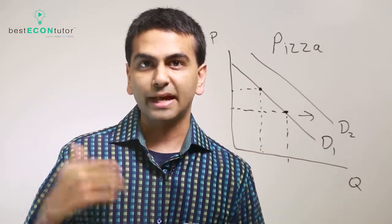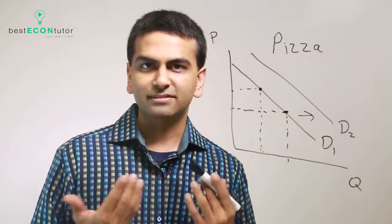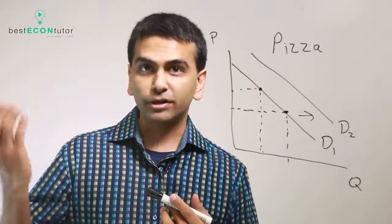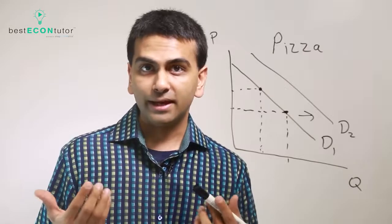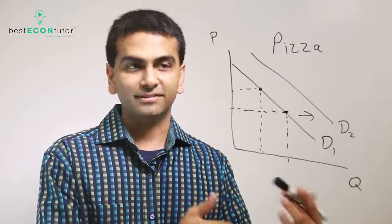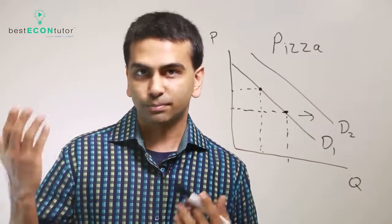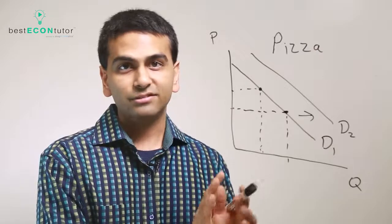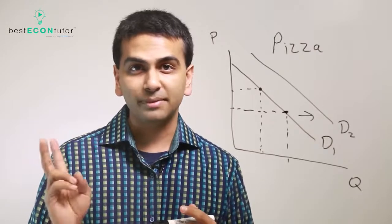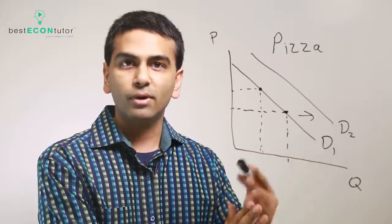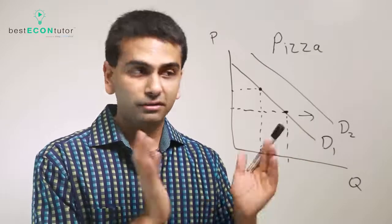Now, on the other hand, if we were looking at a substitute good, meaning something that's kind of in competition with pizza, like burgers. Well, let's say burgers became cheaper. Well, in that case, you probably want to have more burgers and less pizza. So in that case, the demand would actually shift to the left. So if another good's price changes, you have to ask yourself, is that a substitute good, a complementary good, or not related at all? And based on that, you can decide whether you want to shift your demand left, right, or not move it at all.